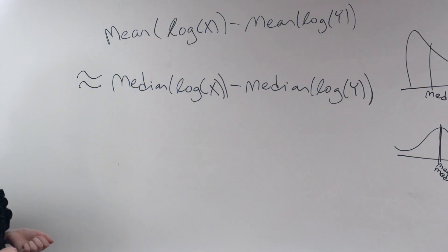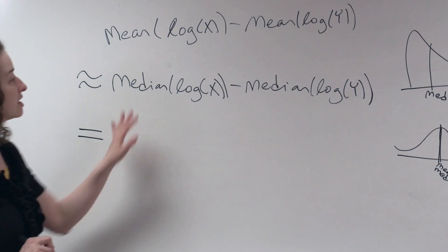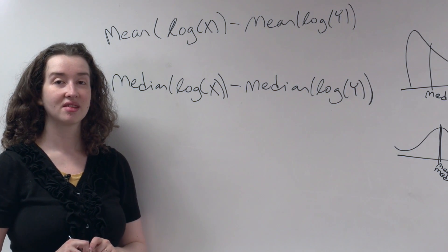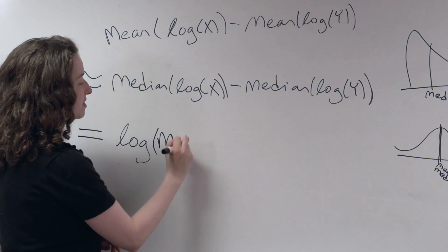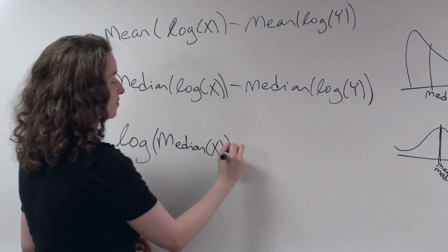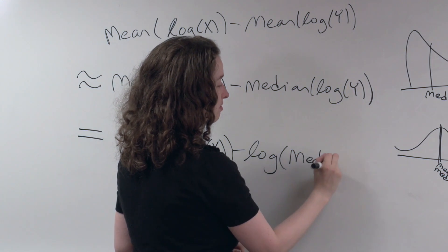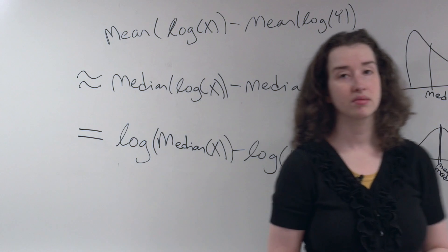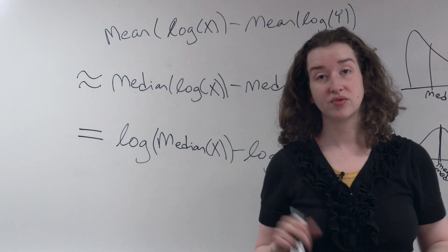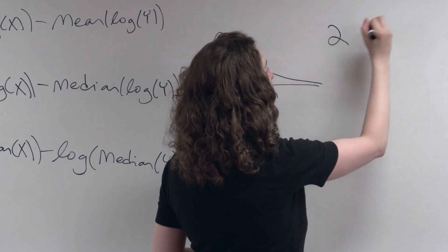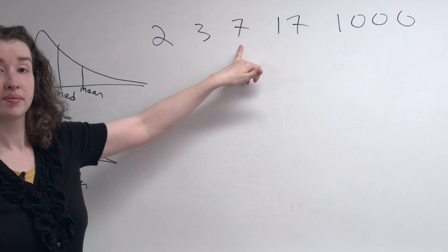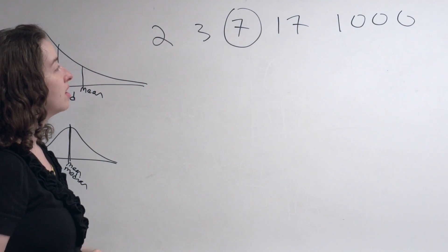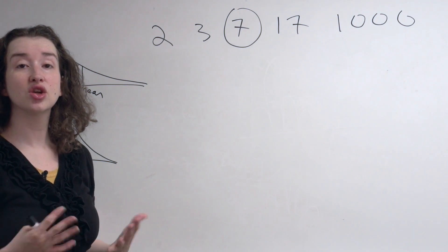Now I'm going to show you something that is actually exactly equal, not just approximately equal. How does the median of the log relate to the log of the median? It turns out it's okay to flip those two words — the log and the median are interchangeable in this expression. The median is simply the middle of a bunch of numbers. If I write down a bunch of numbers in order, the median is the middle one.